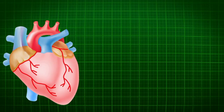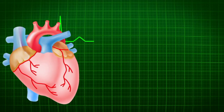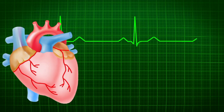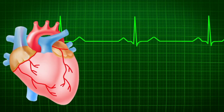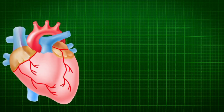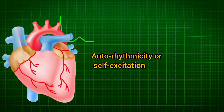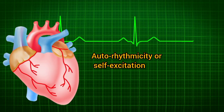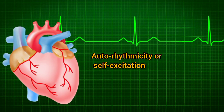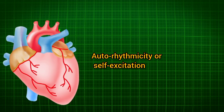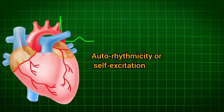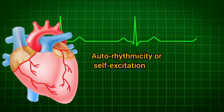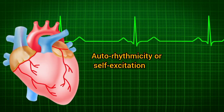Rhythmicity is the ability of a tissue to produce its own impulses regularly. It is also called auto-rhythmicity or self-excitation. The property of rhythmicity is present in all the tissues of the heart.